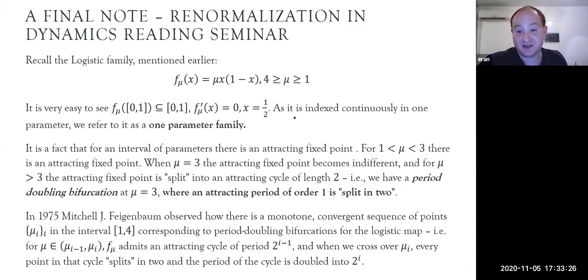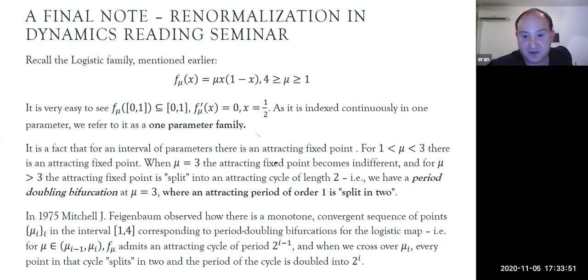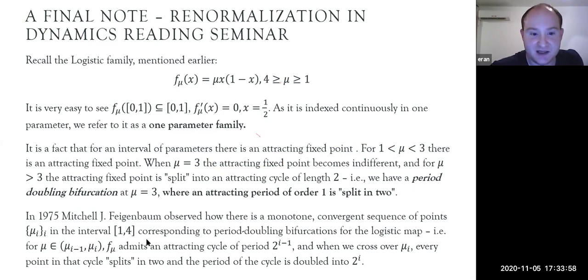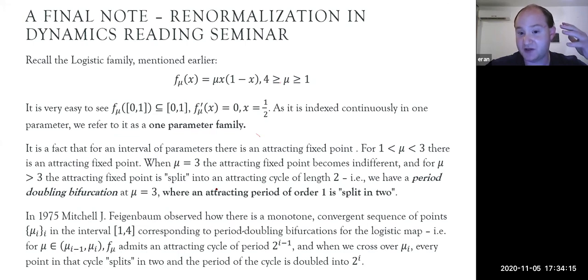When the parameter μ equals three, the attracting fixed point becomes indifferent, and for μ greater than three the fixed point splits in two, becoming an attracting cycle of length two. That is, we have a period-doubling bifurcation at μ = 3, where an attracting period-one orbit splits into an attracting period-two orbit.